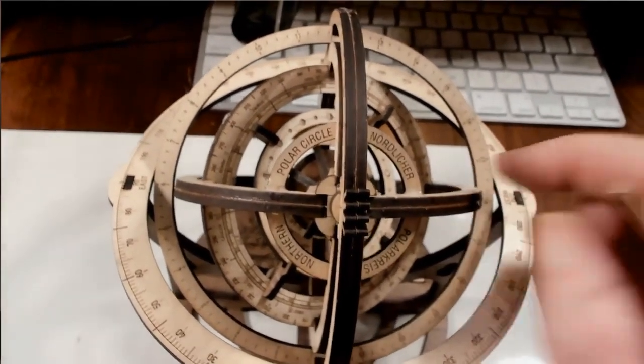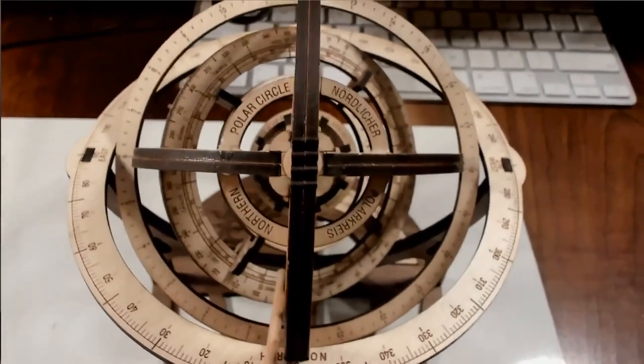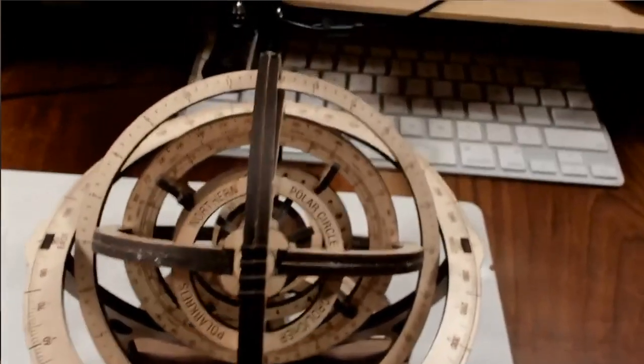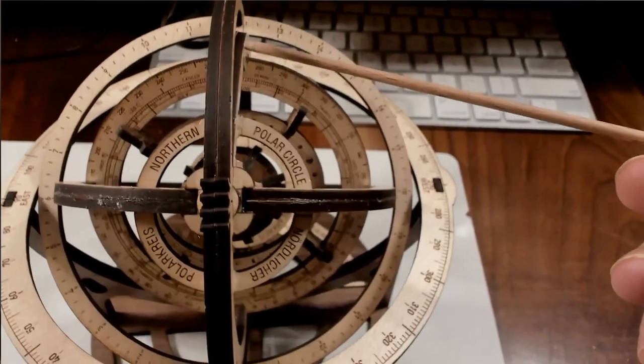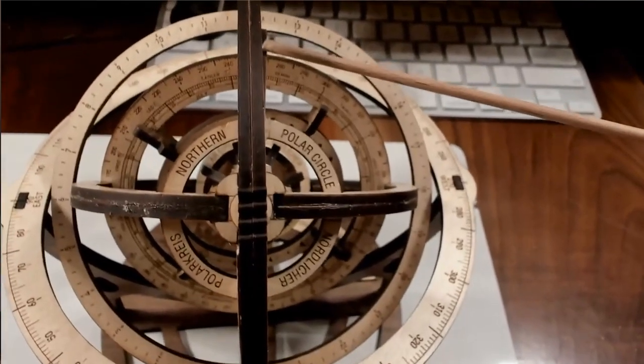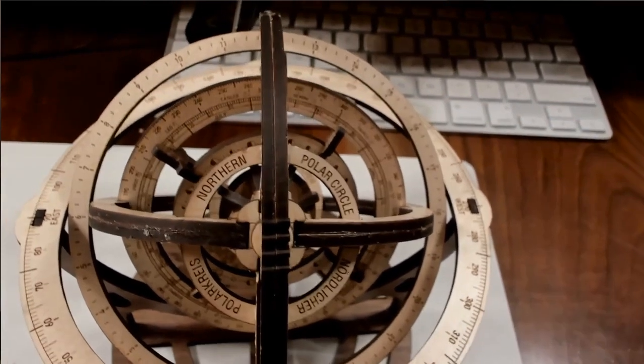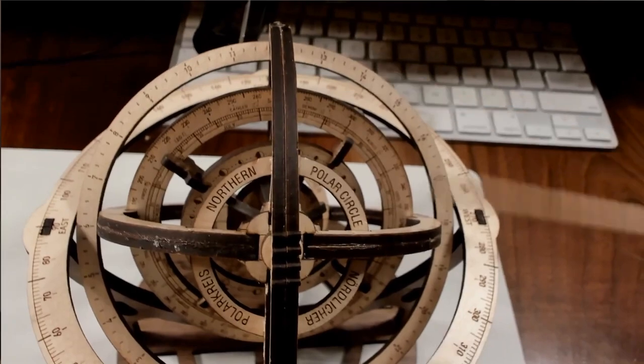Now one thing that is extremely important in the construction of the armillary sphere is when you rotate these rings they must line up perfectly with your meridian ring. So notice when I rotate the equinox directly under the meridian ring they're very closely aligned. However when I rotate the summer and the winter solstice together I want you to notice that this is slightly off. It's not quite aligned and as a result you can have a one or two degree error in the readings.